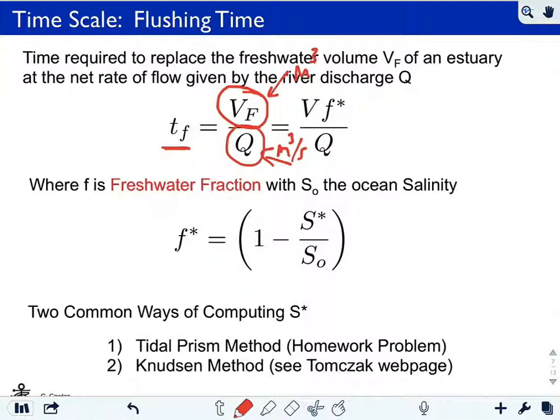Now we're going to express this VF, this volume of fresh water, as the total volume in the estuary, the total volume of all the water, times what's called the fresh water fraction. This fresh water fraction is a measure of how fresh the water in the estuary is. Essentially, where is that water in the estuary between zero, which is the river, and S0, which is the open ocean salinity.